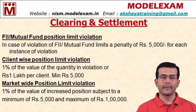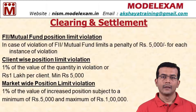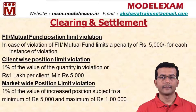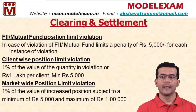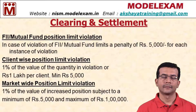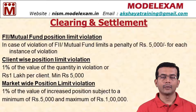In this slide we have given the charges for various limit violations. The first one is member-wide position limit violation. In case of a violation of FII or mutual fund limits, a penalty of five thousand rupees for each instance of violation is applicable. So if the member-wide position limit is violated, five thousand is the penalty that is applicable.